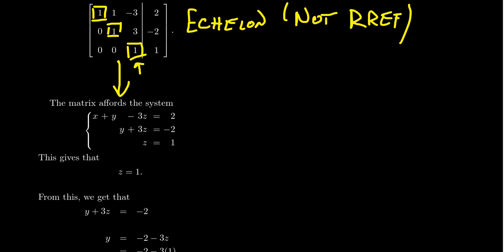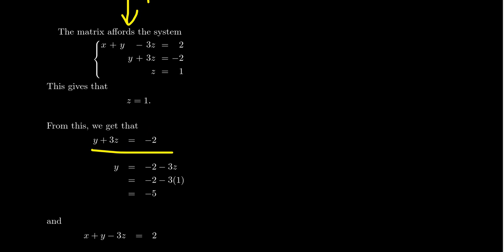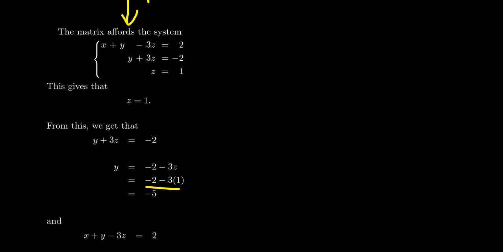Now, thinking of the substitution method: since we know z = 1, look at the equation above it — y + 3z = −2. That equation only depends on y and z, and we know z. So substituting z = 1 into the second equation, we solve for y: y = −2 − 3z = −2 − 3(1) = −2 − 3 = −5. So because we knew z, and had an equation depending only on y and z, we substituted z in and solved for y = −5.